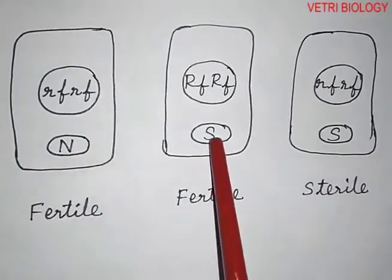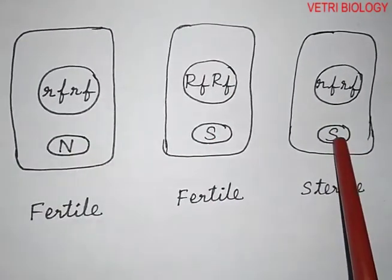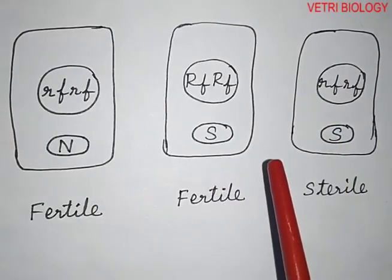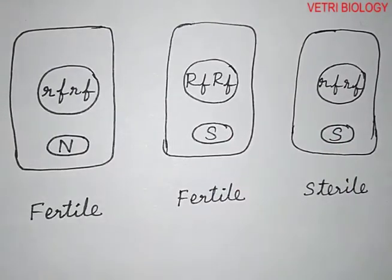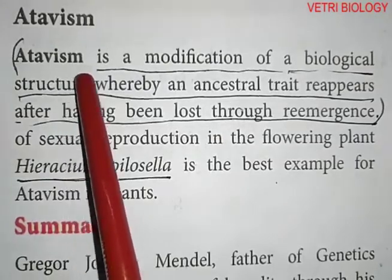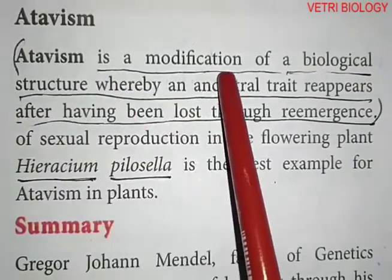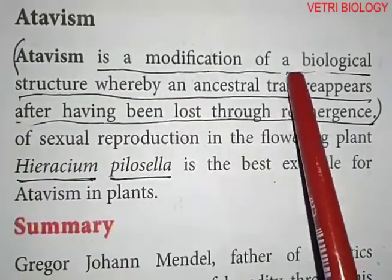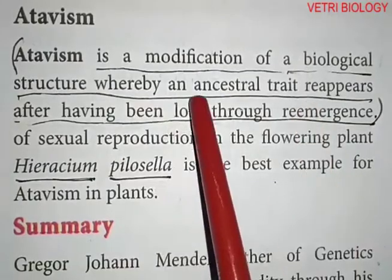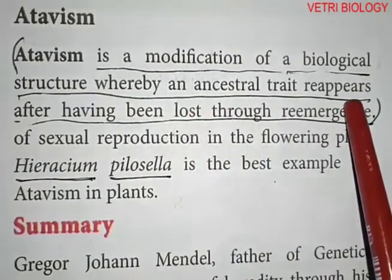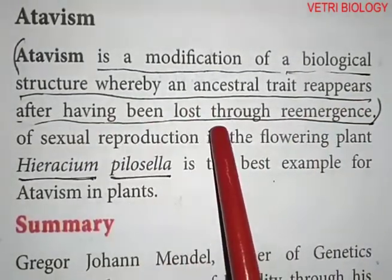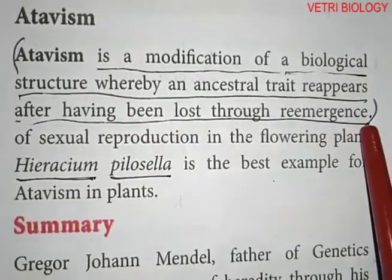Then, atavism. Atavism is a modification of a biological structure whereby an ancestral trait reappears after having been lost through evolutionary change — it is a re-emergence of an ancestral genetic character in an organism.